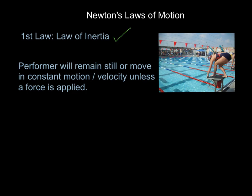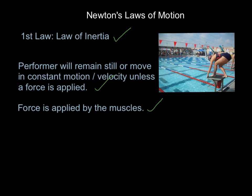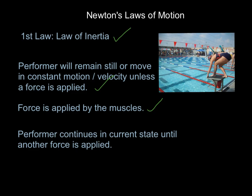Equally, if she was swimming at constant velocity and wanted to accelerate, she would have to apply a greater force. You'll also get a mark for saying that this force is applied by the muscles — she has to contract her quads, glutes, and gastrocnemius to drive off the block into the water. Muscle contraction changes her current state, which was still, in order to overcome her inertia and get moving.